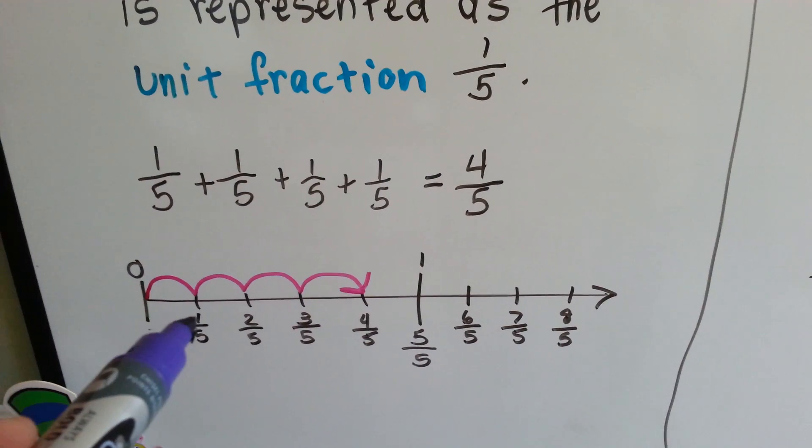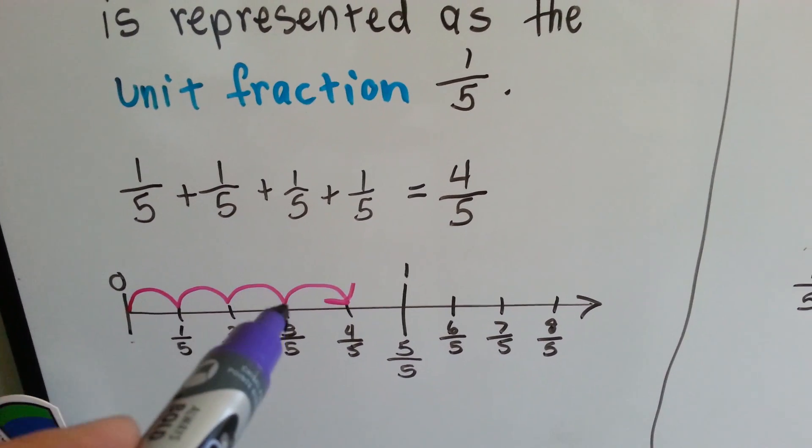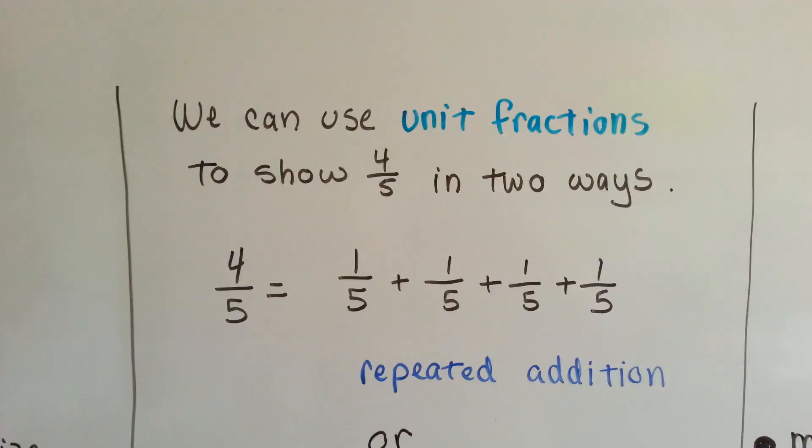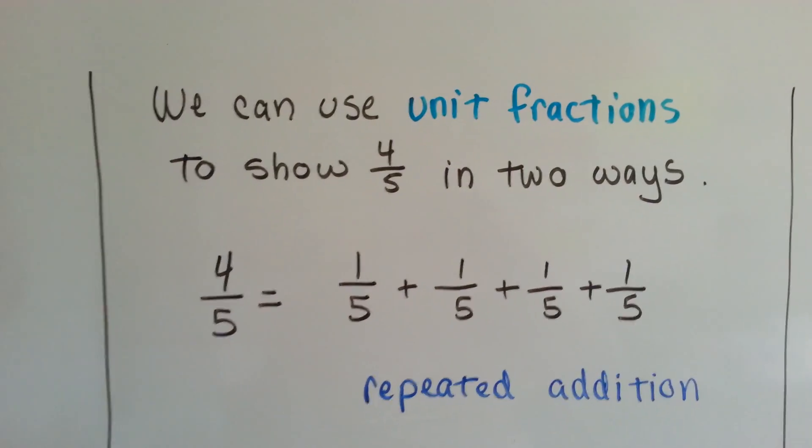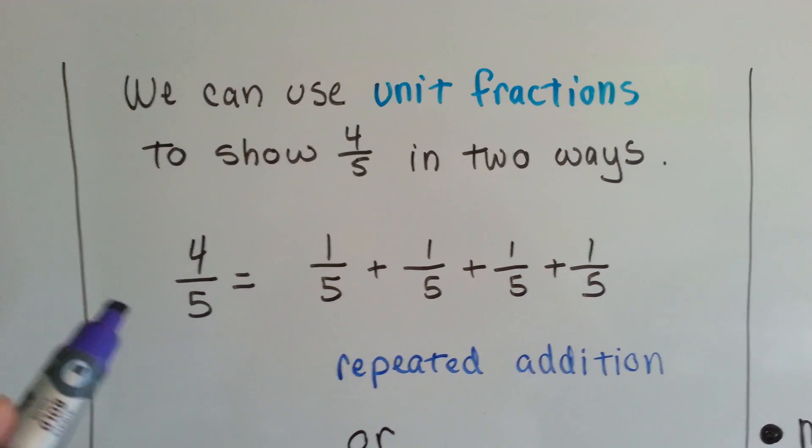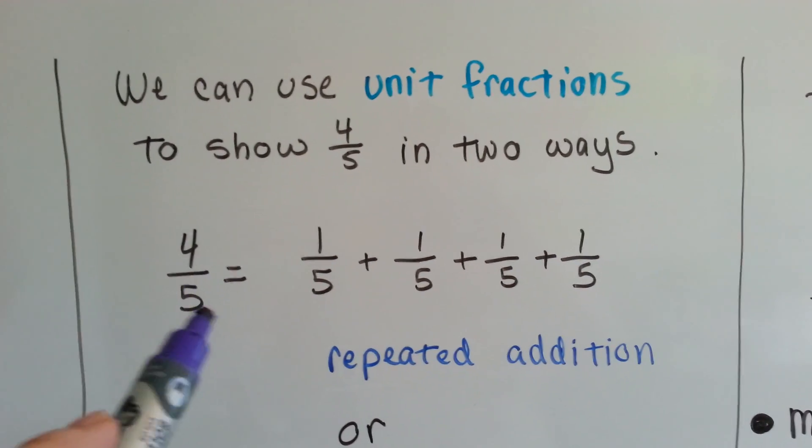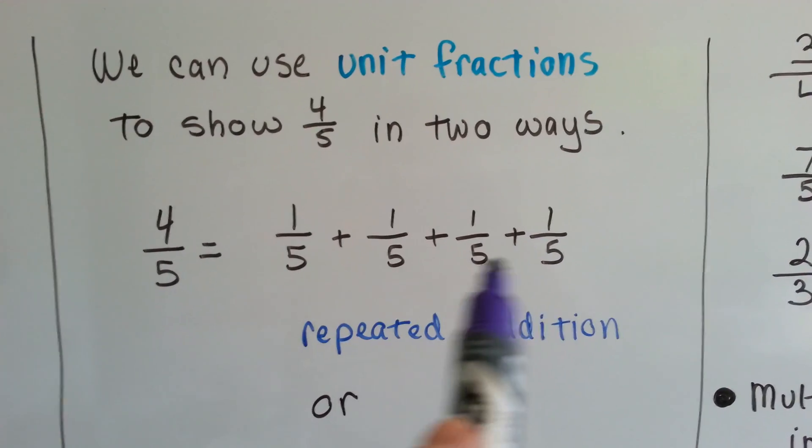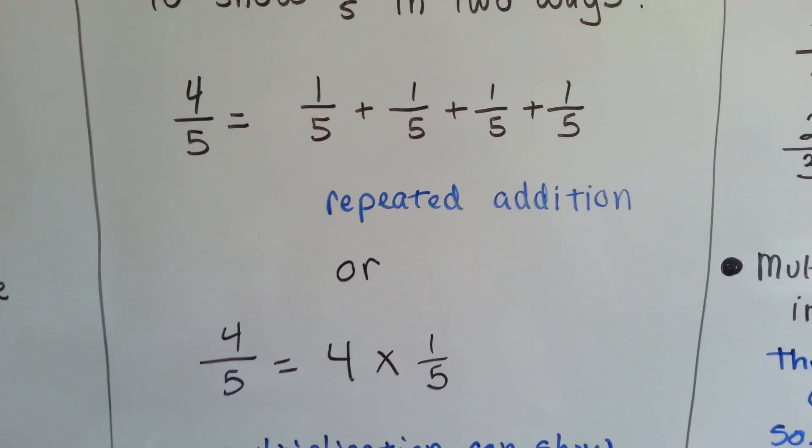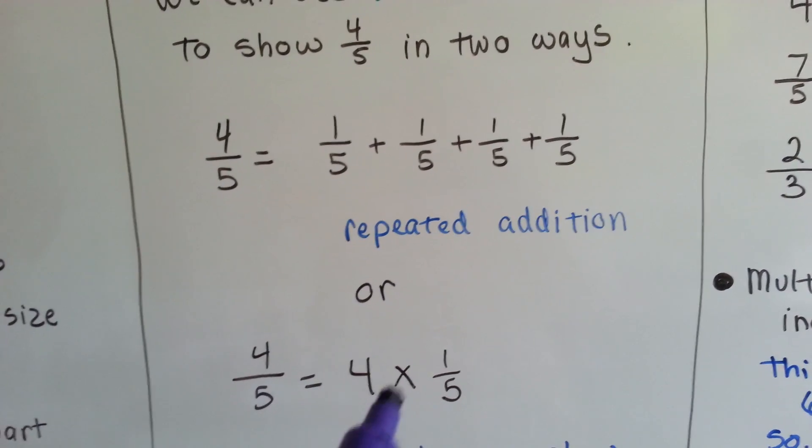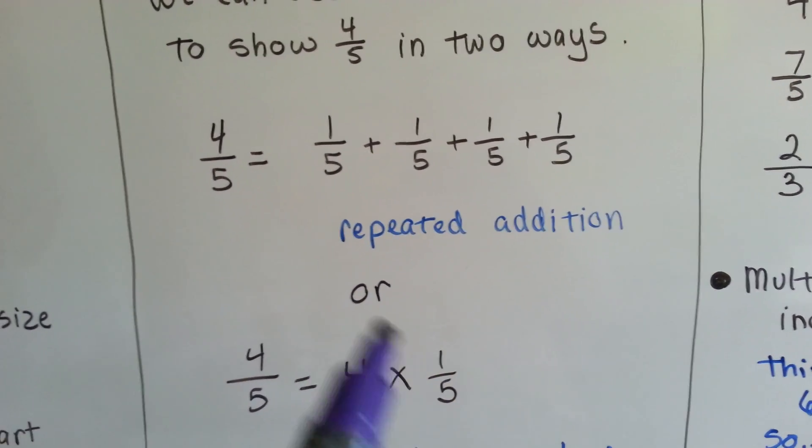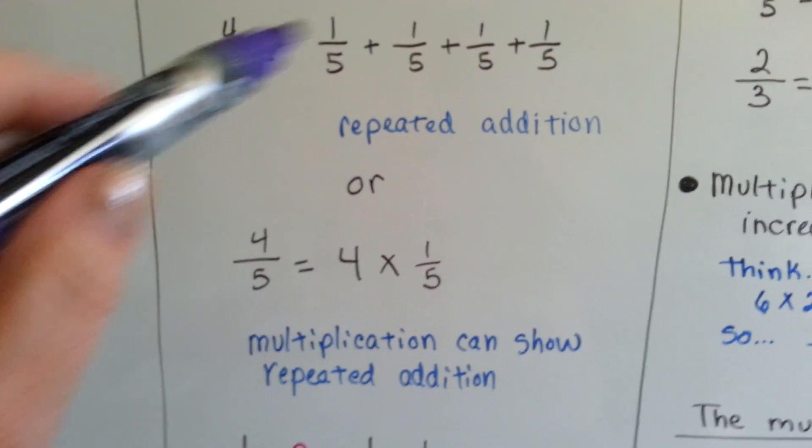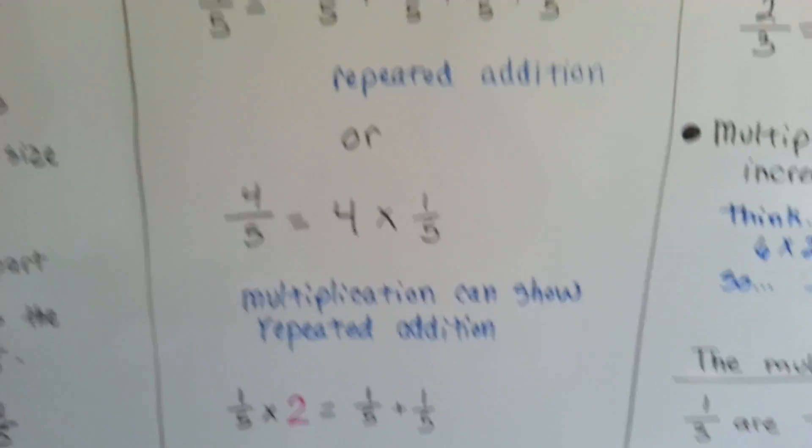This would be 1 times 1 fifth, 2 times 1 fifth, 3 times 1 fifth, 4 times 1 fifth. We can use unit fractions to show 4 fifths in two ways. We can show it like we just did. 4 fifths is equal to 1 fifth plus 1 fifth plus 1 fifth plus 1 fifth, which is repeated addition. Or, we could say 4 fifths is equal to 4 times the 1 fifth. Multiplication can show repeated addition. It's the same thing.